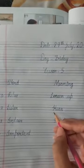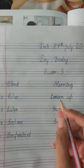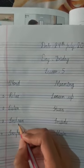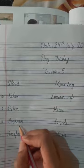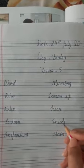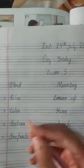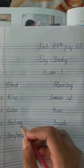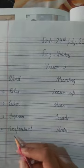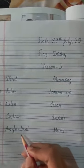Listen matlab sunna, to hear — h-e-a-r. Third is 'indoor' — i-n-d-o-o-r. Indoor matlab inside — i-n-s-i-d-e, inside. Dekho: 'in' matlab main, door ke under — like inside the door.